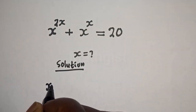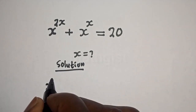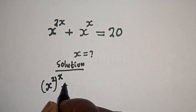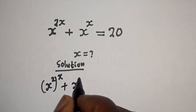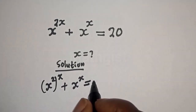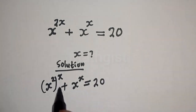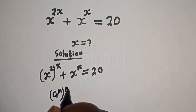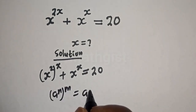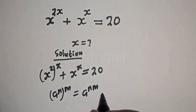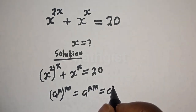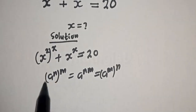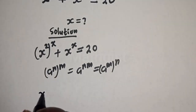We have s raised to power 2s, plus s raised to power s is equal to 20. Take note that a raised to power n to the power of m is equal to a raised to power n times m. This identity also means it can be written as a raised to power m to the power of n.